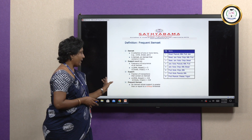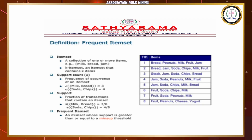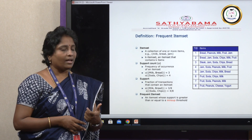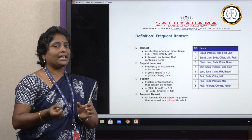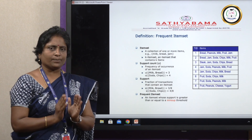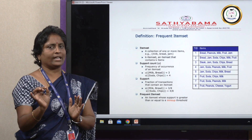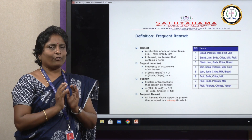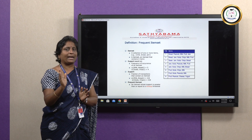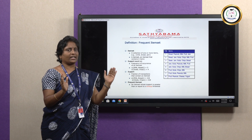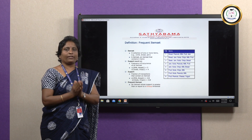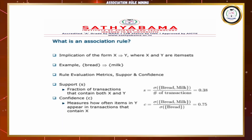The frequent item set is an item set which has occurred more than the minimum threshold value. For example, just as a passing percentage threshold is 50 marks, we have a minimum support count as a comparison value. If any item set's occurrence is greater than or equal to the minimum support count, then it is called a frequent item set.